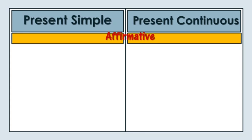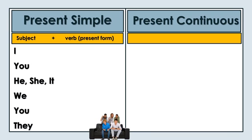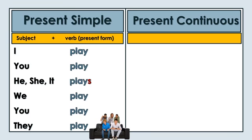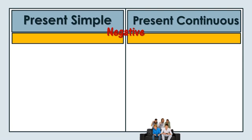Forms - Affirmative. Present Simple: play, plays. Present Continuous: playing, am playing, is playing, are playing.